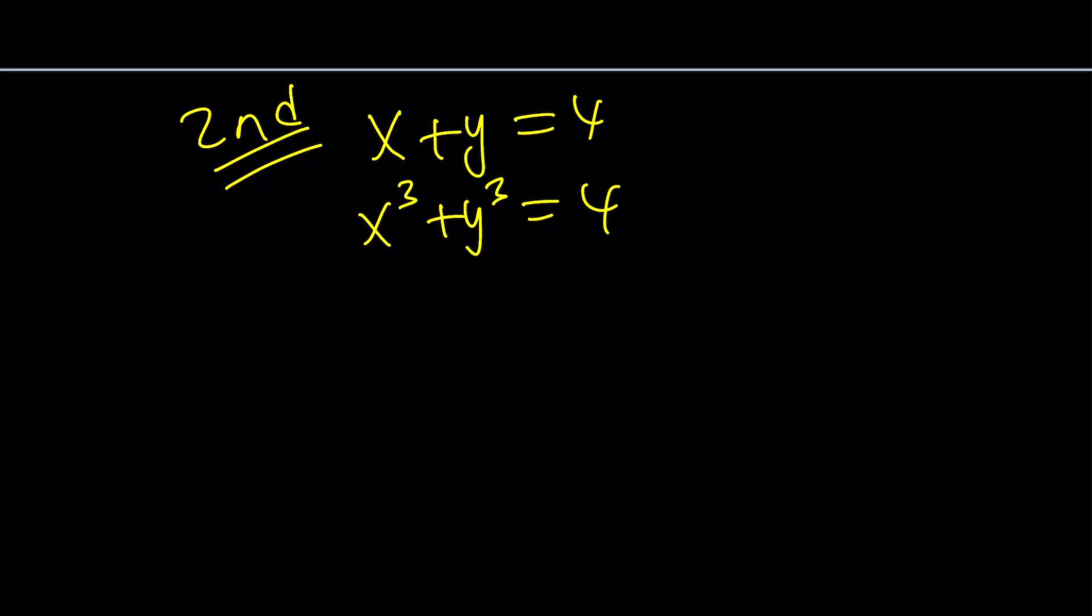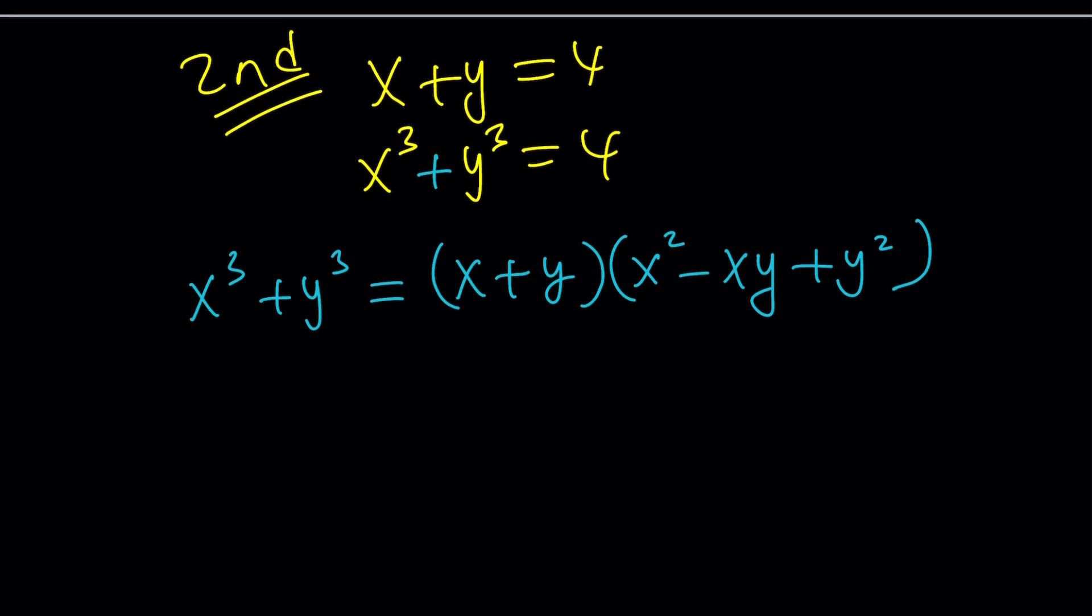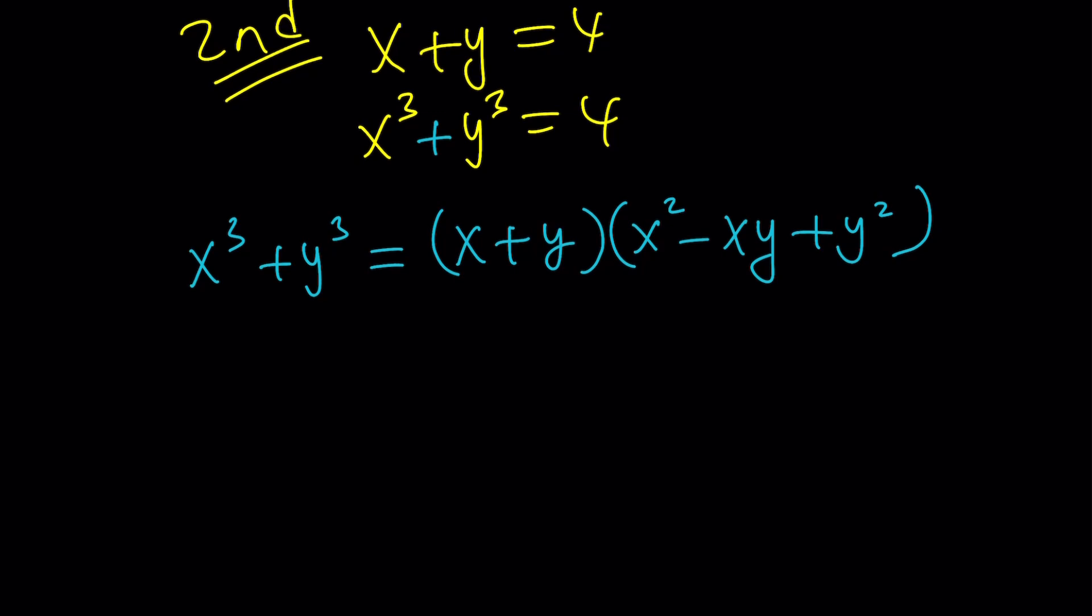You know, x cubed plus y cubed is a sum of two cubes, right? So we can factor it. But how do you factor it? Well, x cubed plus y cubed can be written as x plus y times x squared minus xy plus y squared. And you might be questioning, where does this come from? If you distribute, you're going to get this. But how do you get this complicated product from something that looks simple? So that's a good question to answer.